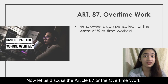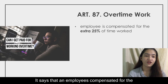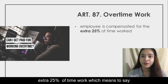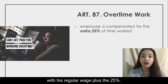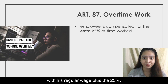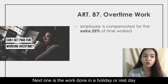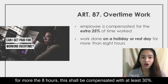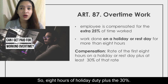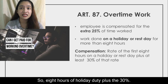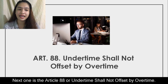Article 87, or the overtime work, states that an employee is compensated for the extra 25% of time worked — which means that if an employee is doing overtime work, he or she shall be compensated with the regular wage plus 25%. For work done on a holiday or rest day for more than 8 hours, this shall be compensated with at least 30% — so 8 hours of holiday duty plus the 30%.